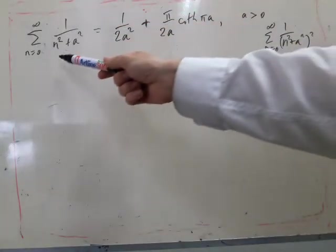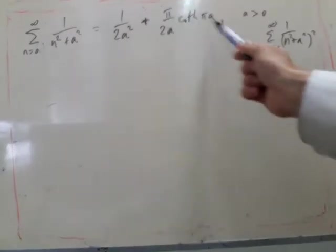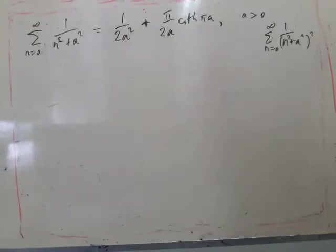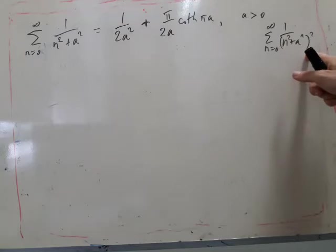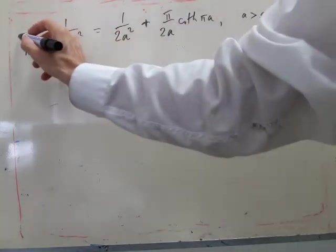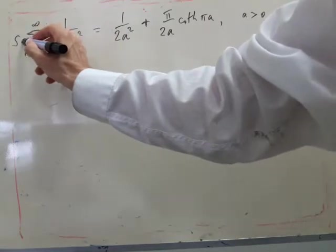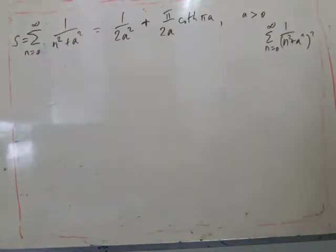We're asked to show that this sum here is equal to this expression here, and also from that find the sum of this thing squared. This is fairly straightforward. I'll call this S, so the thing we want to find is S.